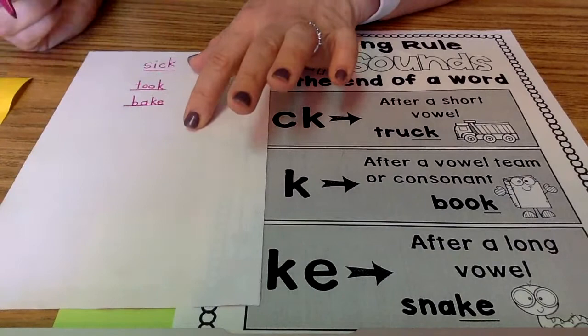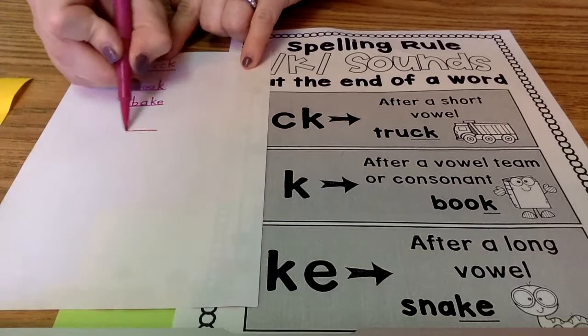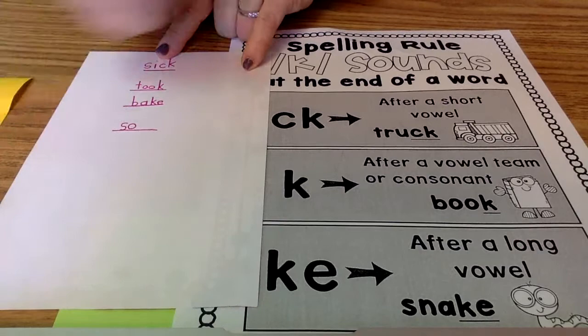All right, my next word is sock. S, ah, I hear a short vowel, so I need a C. Okay.